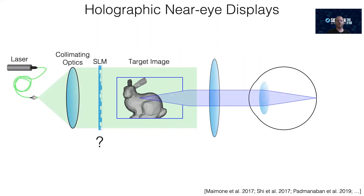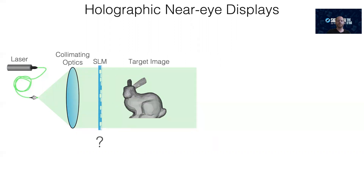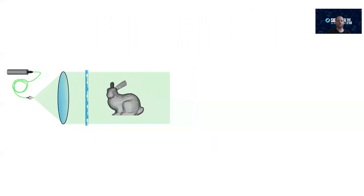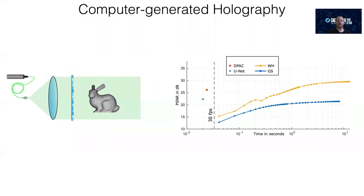How to compute the SLM pattern is one of the core challenges of computer-generated holography. There are basically two types of CGH algorithms: iterative and direct methods. Iterative methods are typically slower but better, and direct methods are fast but often not great.